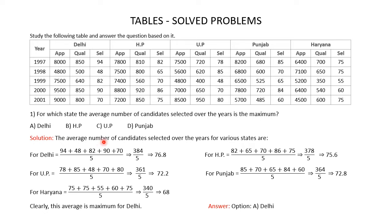For Delhi, the average is 94 + 48 + 82 + 90 + 70 divided by 5, which is 384 divided by 5 = 76.8. For Himachal Pradesh, the average is 82 + 65 + 70 + 86 + 75 divided by 5, which is 378 divided by 5 = 75.6.